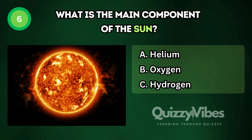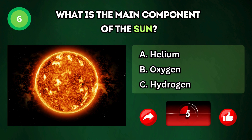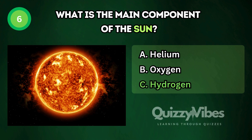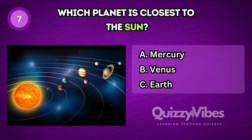What is the main component of the sun? Answer C, hydrogen. Which planet is closest to the sun?